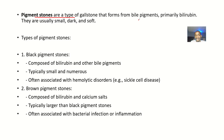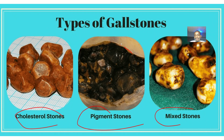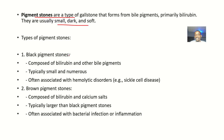Pigment stones are usually dark, small, and soft — as you can see, dark, small, and looking soft — unlike this one that is looking hard. Talking about the types of pigment stones, you have the black pigment stones, which are composed of bilirubin and are typically small and numerous.